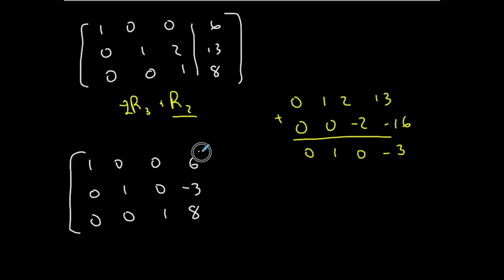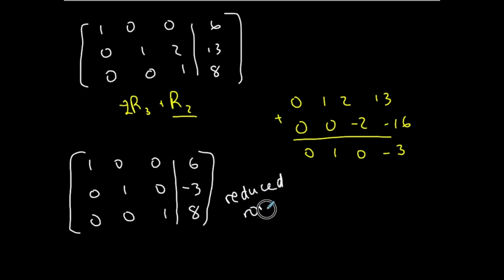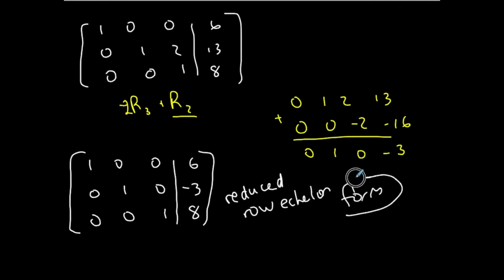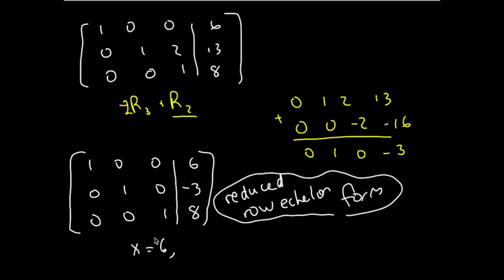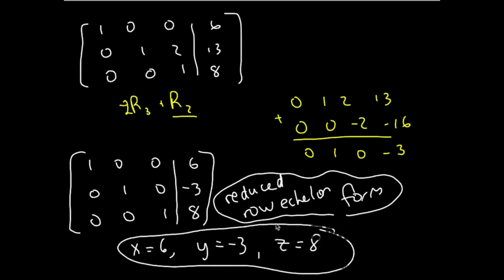I'm finally in reduced row echelon form, which is a wonderful form because now I can straight up say x is 6 (1x + 0y + 0z = 6), y is negative 3, and z is 8. I have the solution to the system directly from reduced row echelon form.